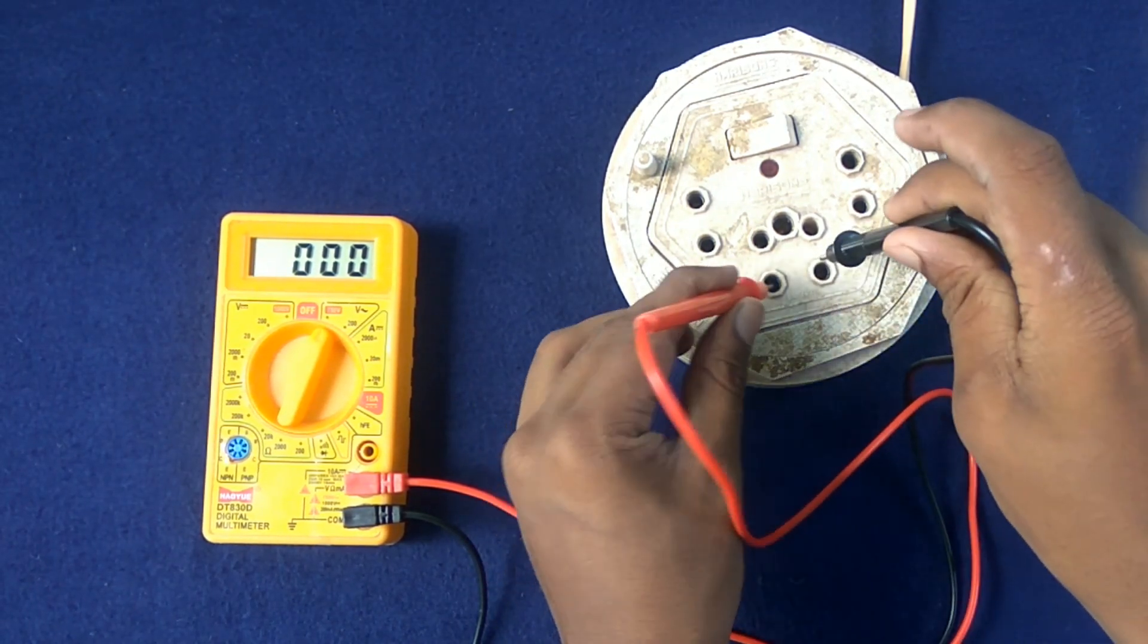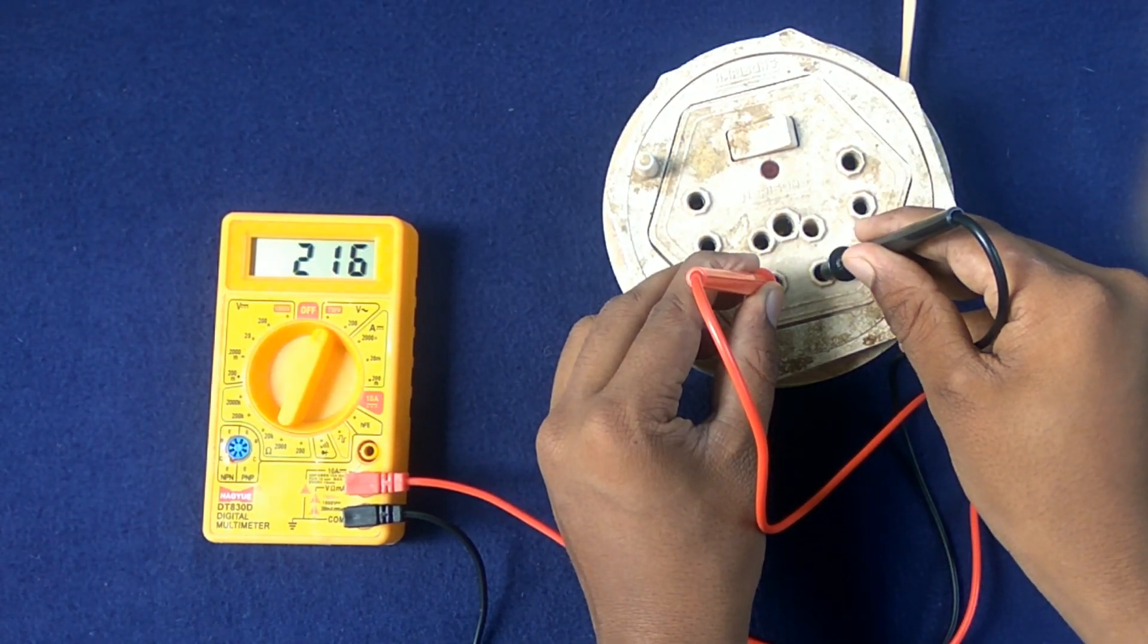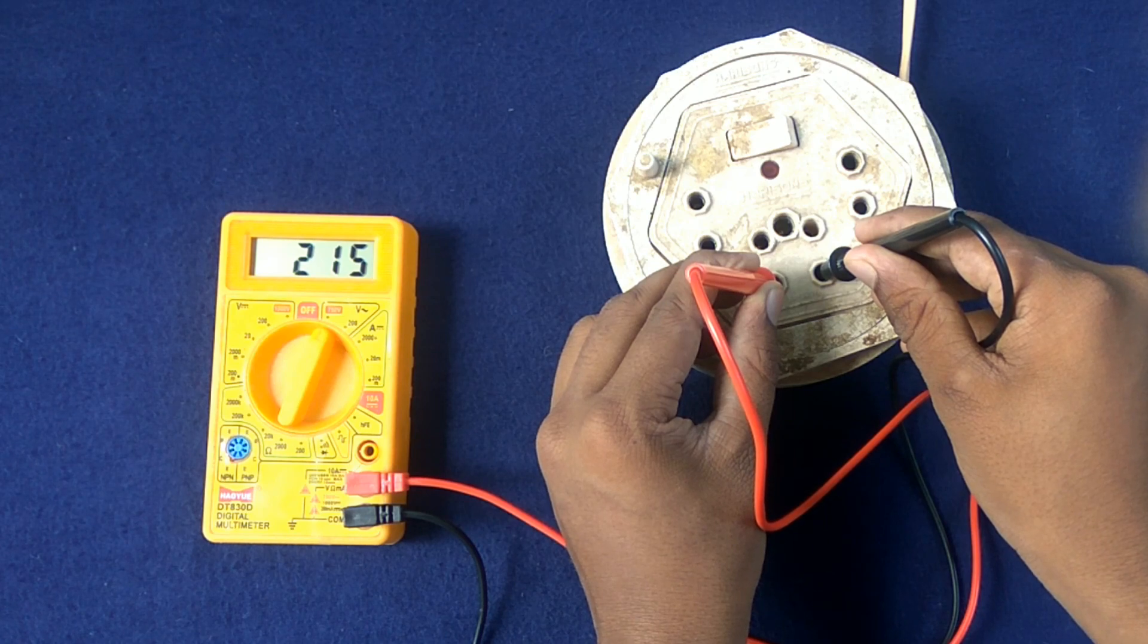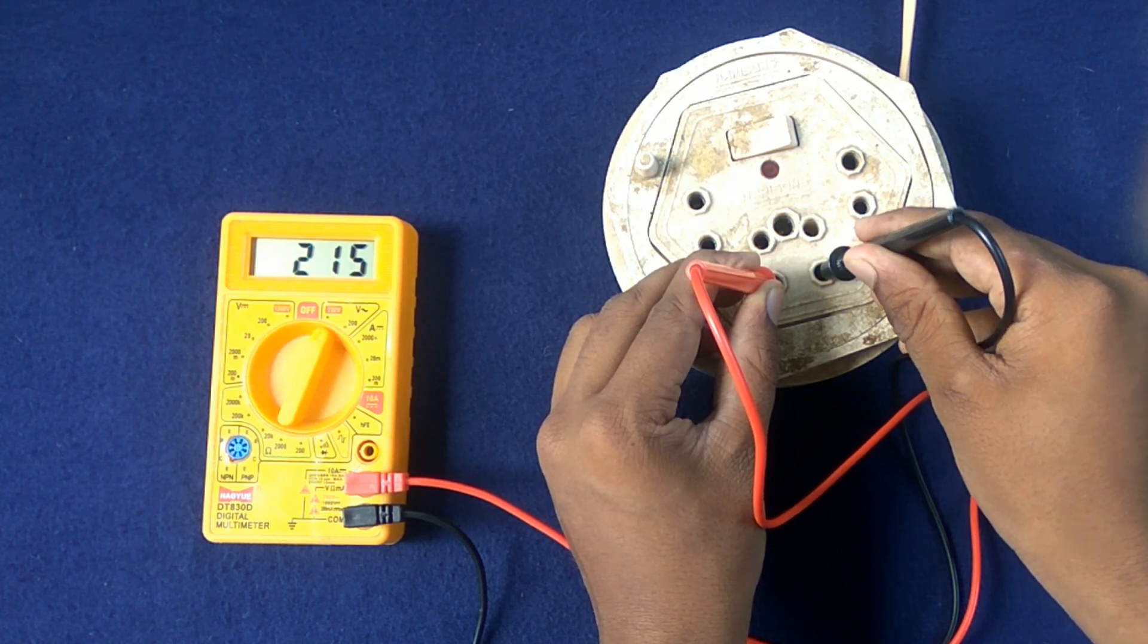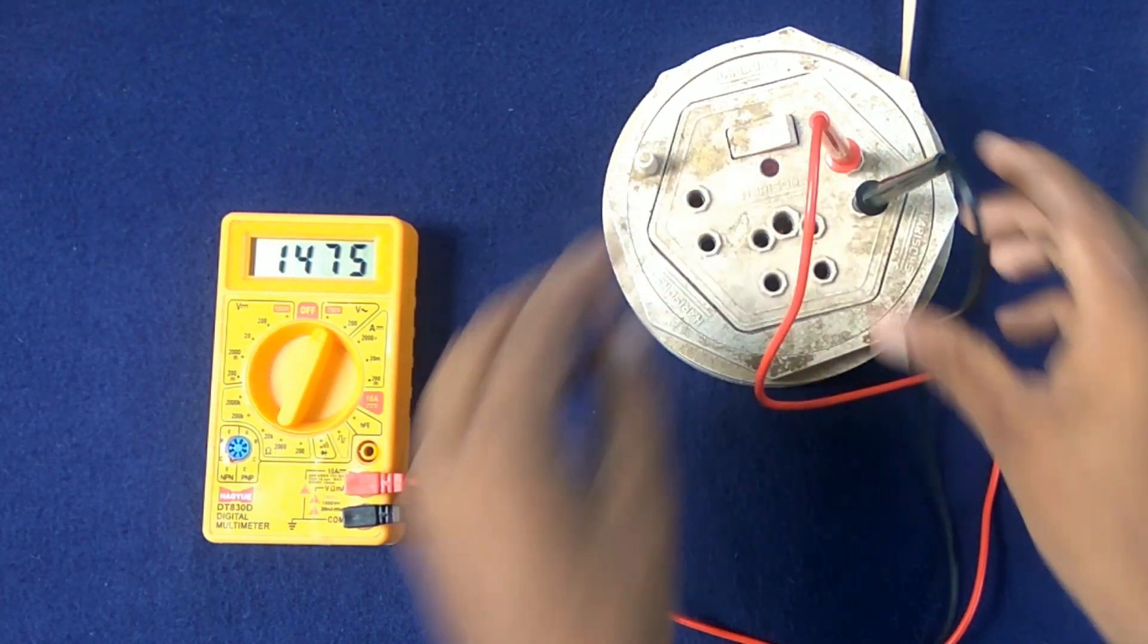There is no plus or minus in AC. The reading changes rapidly because alternating current is not stable.